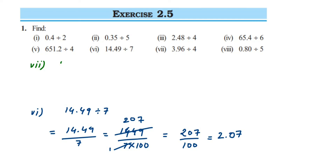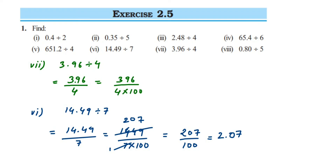Seventh question: 3.96 divided by 4. Remove the decimal — two digits — giving 396 divided by 4 multiplied by 100. Cancel in 4 table: 4 ones are 4; 4 nines are 36, remainder 3 makes 36 again; 4 nines are 36. That gives 99 upon 100. Convert back to decimal: 0.99 is the answer.